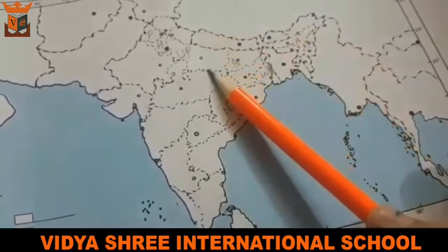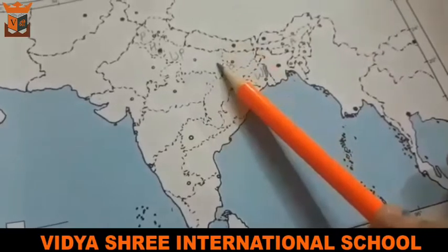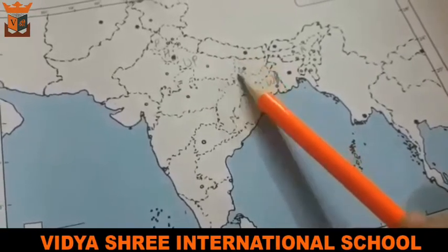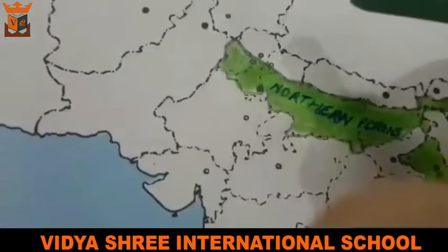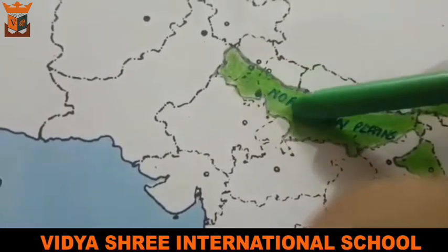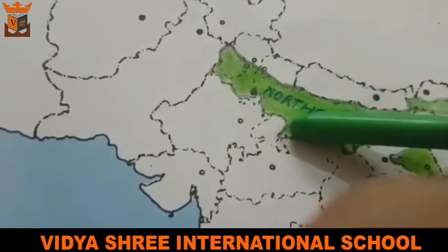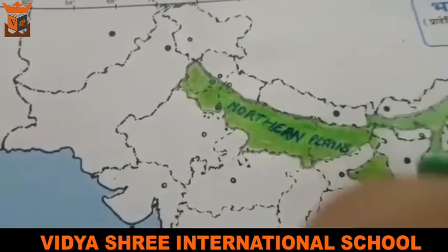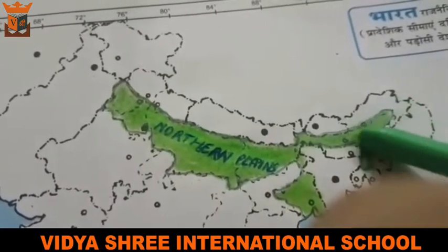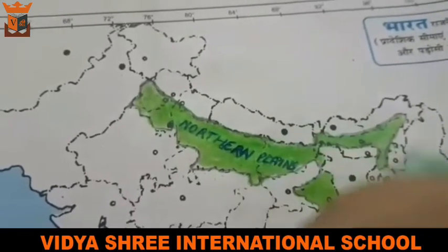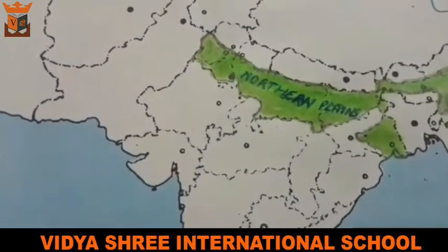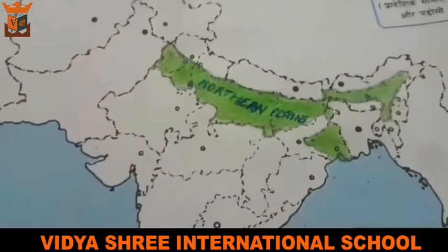Now we will do the coloring. Which color will we use? Green color. So we will use green color to fill our Northern Plains. Starting from Punjab, here we have Haryana, Delhi, Uttar Pradesh, then Bihar, West Bengal, and Assam. In this way you will show the Northern Plains on your map — highlighting Punjab, Haryana, Delhi, Uttar Pradesh, Bihar, West Bengal, and Assam.